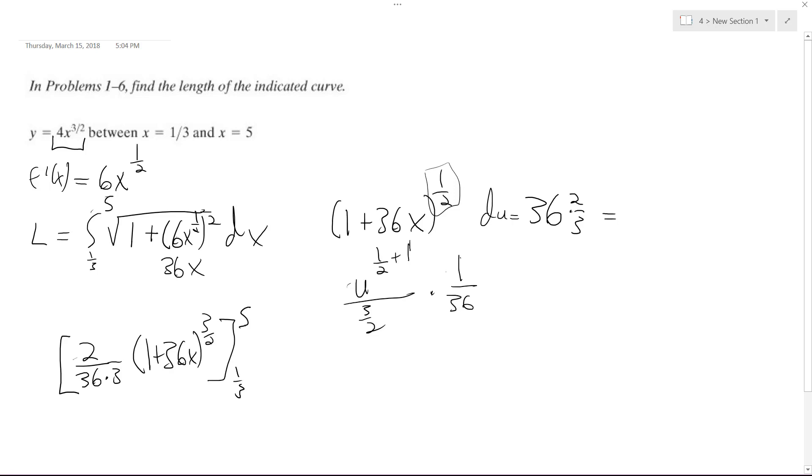From 1/3 to 5, so 2 over 108 is equal to 1 over 54, and then we do the 1 times 36x.